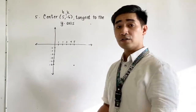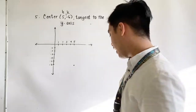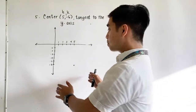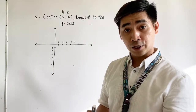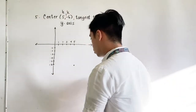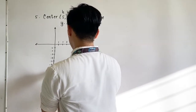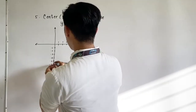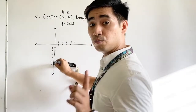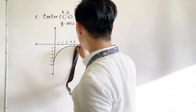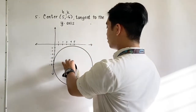But then we are given another condition — it is tangent to the y-axis. If it is tangent to the y-axis, therefore the circle and the y-axis will only meet at one point. So let us try to draw the graph. From the center going to the y-axis, which will only touch at one point, and that point is at y equals negative 6.